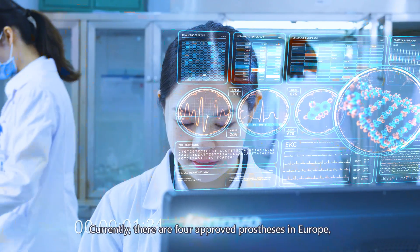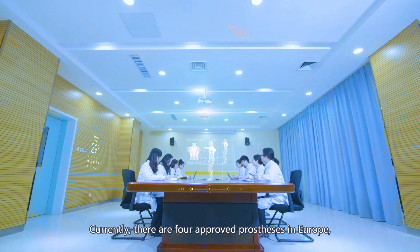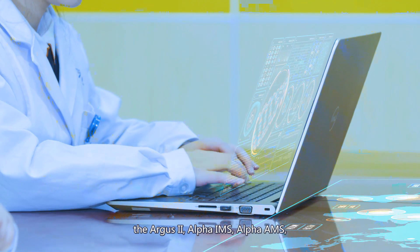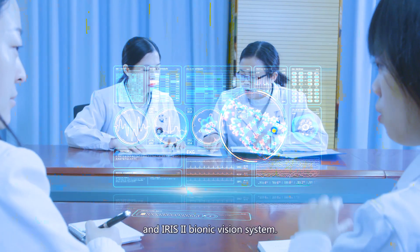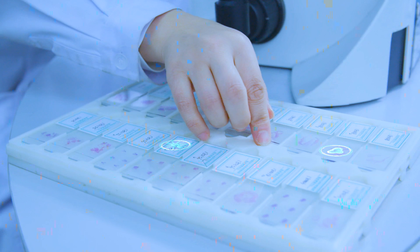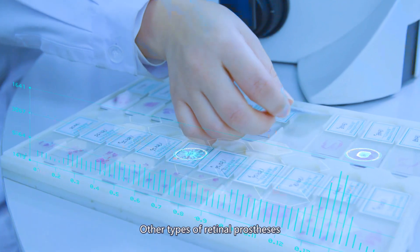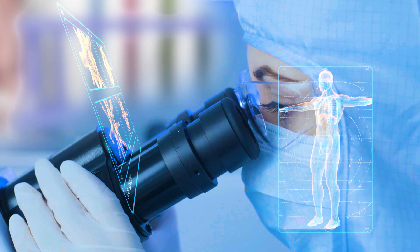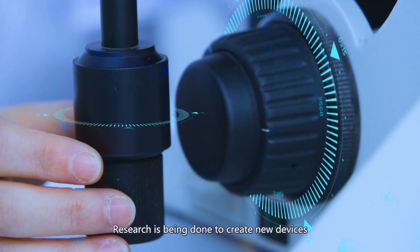Ongoing research for artificial retina. Currently, there are four approved prostheses in Europe: the Argus 2, Alpha IMS, Alpha AMS, and IRIS 2 Bionic Vision System. Other types of retinal prostheses are being studied in clinical trials around the world. Research is being done to create new devices as well as improving outcomes with existing devices.